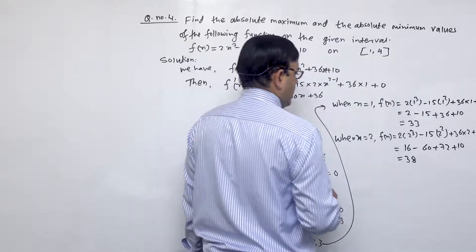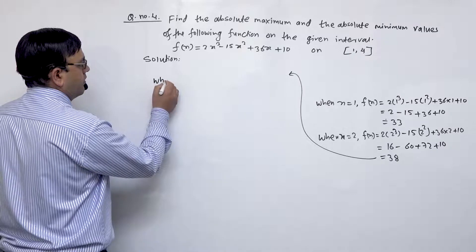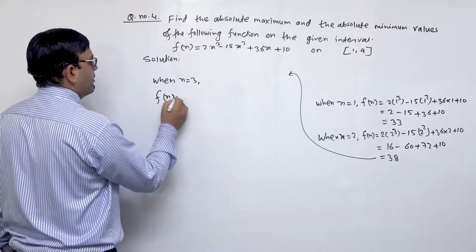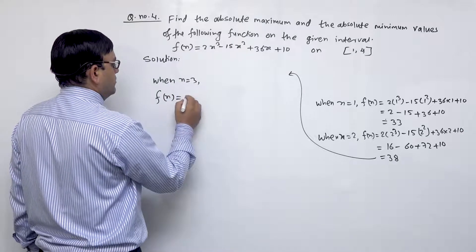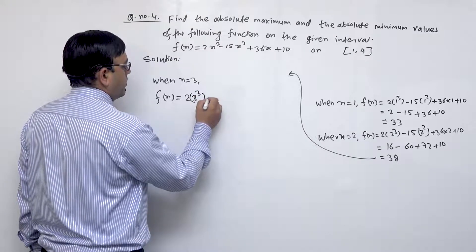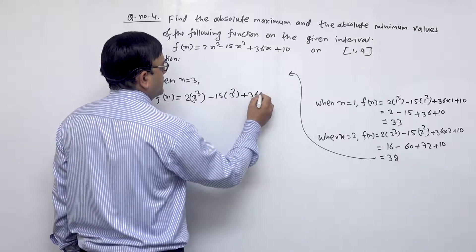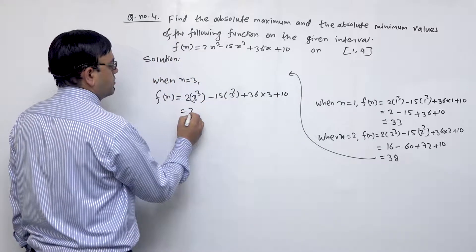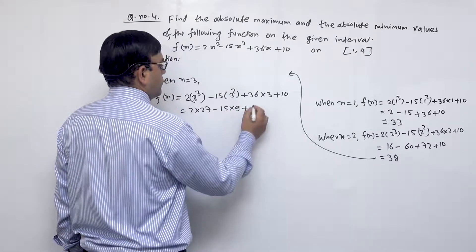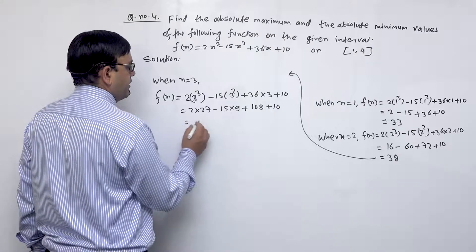When x = 3, f(3) = 2(3)³ - 15(3)² + 36(3) + 10 = 54 - 135 + 108 + 10 = 37.